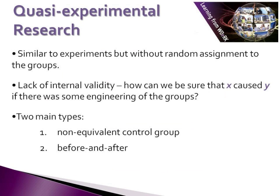When it is not possible to use a classical experimental design, a quasi-experimental design may be more appropriate. Quasi-experimental research is similar to experimental research, but it does not adhere to all of its principles — primarily the principle of random selection. Subjects are allocated to groups according to attributes that are already occurring, and are not randomly allocated to those groups by the researcher. This element of not being randomly allocated does impact on the internal validity of the research, as we cannot be sure that X actually caused Y if some form of engineering of the groups is present.